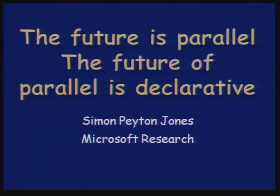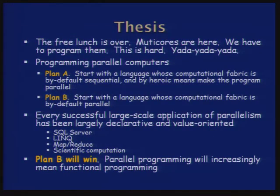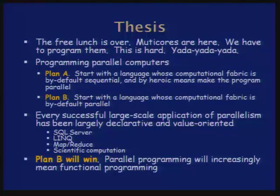So here we are — parallelism. I'm going to spare you most of the first five minutes of most talks about parallelism, about how we're stuck with multi-cores. But if you want to program on a parallel computer, what are you going to do? Would you rather start with a language whose very fabric is by default sequential, by mutating state, or a language that's by default parallel? I think there's a case for saying we should at least think about starting with by-default parallel languages.